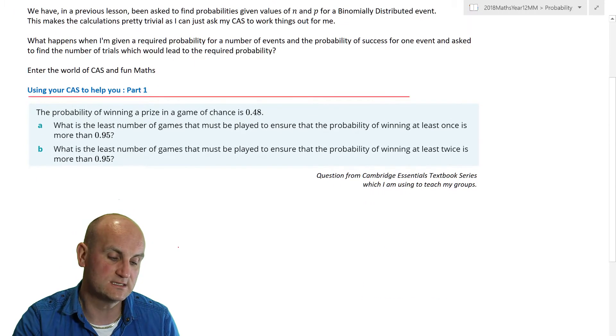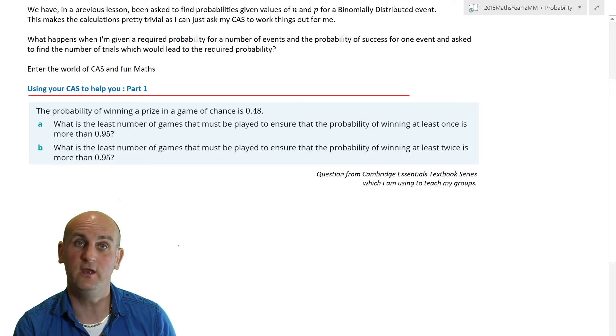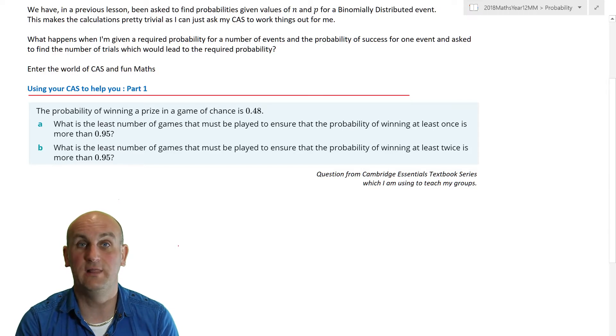So we were asked to find in previous examples the values of the total probabilities or the probability for one event, giving the probability of success and the number of trials. We've been given the value of n and the value of p. But what happens if in maths they decide to give us the answer and miss one of the variables out? Well, the most common one that they miss out is the number of trials, and that's what this video is going to deal with - finding the number of trials that will give you a particular probability of success.